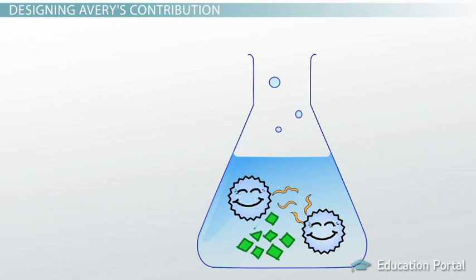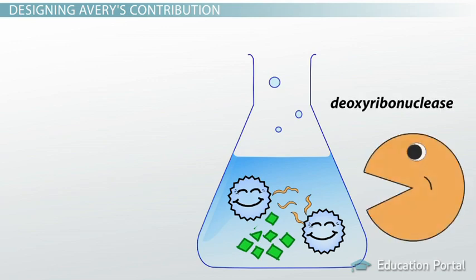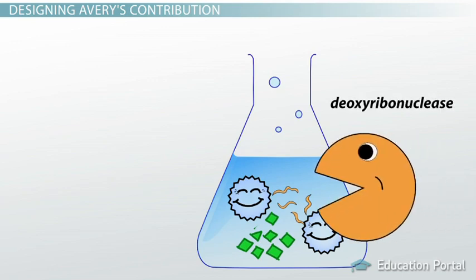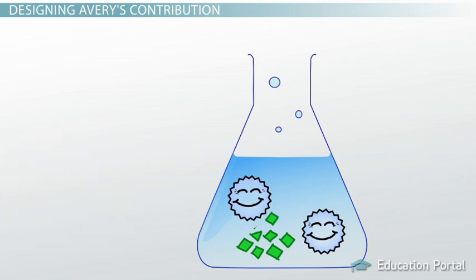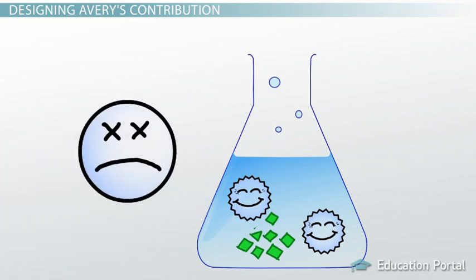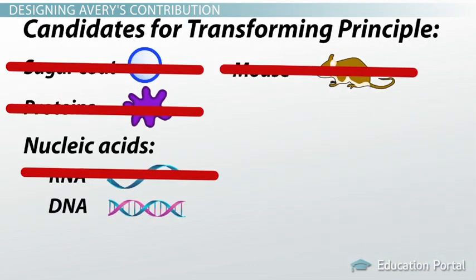To make sure, Avery destroyed the DNA with the enzyme deoxyribonuclease. The resulting mixture was not able to transform live R-bacteria into S-bacteria. So finally, Avery was certain that DNA was the transforming principle.